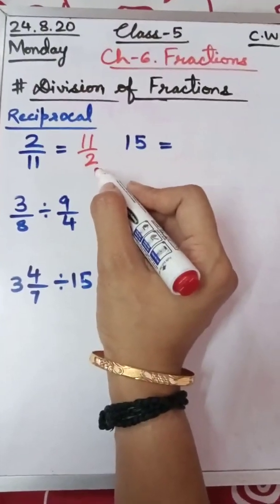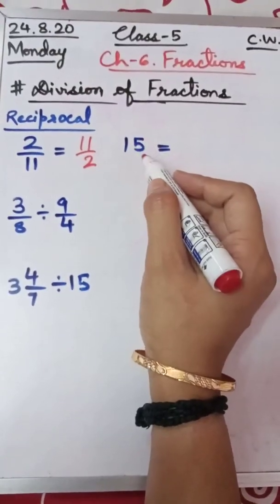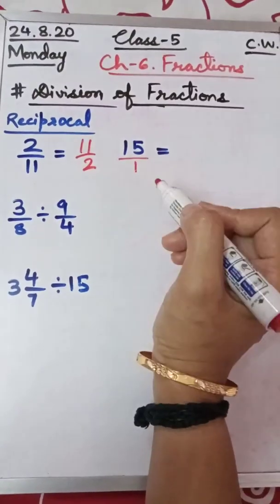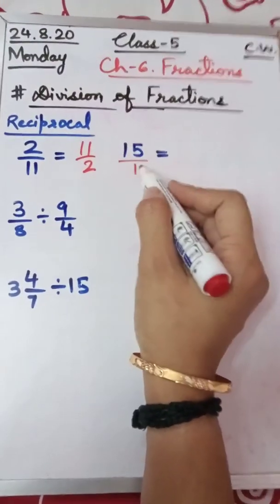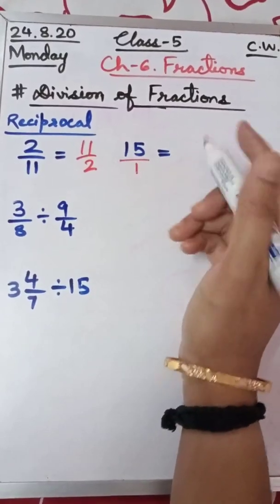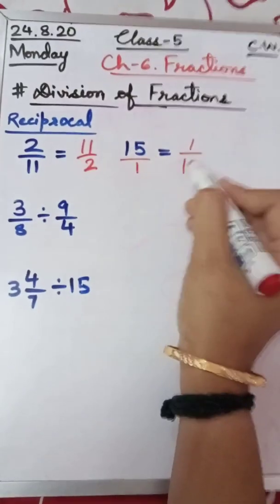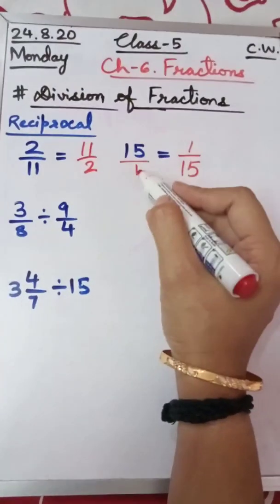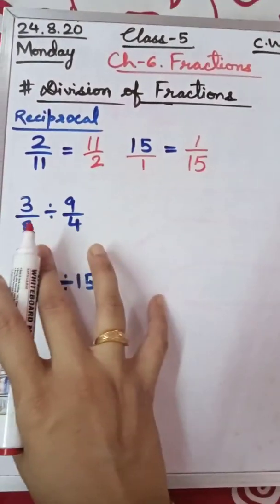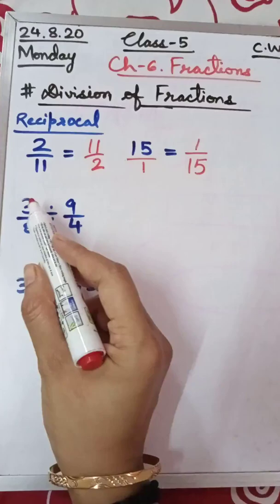The denominator became numerator and numerator became denominator. Now, if we have a whole number, we should first understand how to make a whole number into a fraction by putting 1 in the denominator. After that we have got the fraction — we just exchange or interchange the numerator and denominator. So 1 will become our new numerator and 15 will become our denominator. The reciprocal of 15 is 1 by 15.